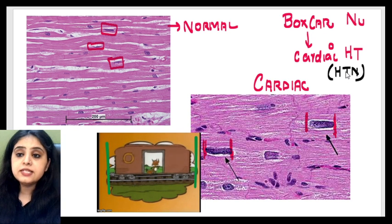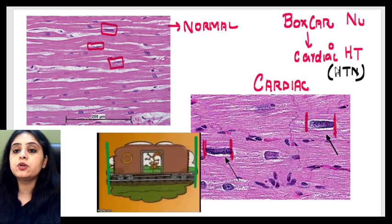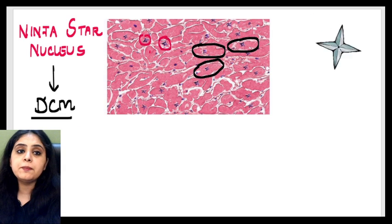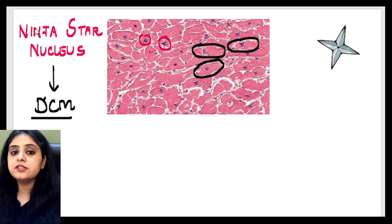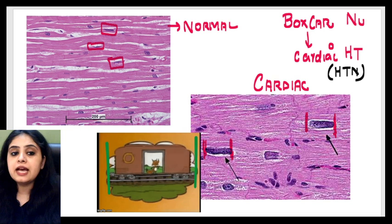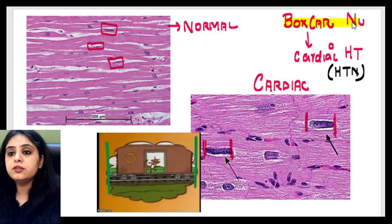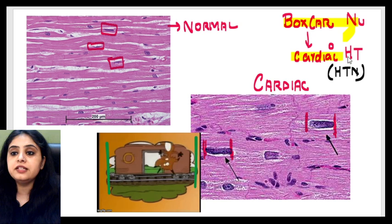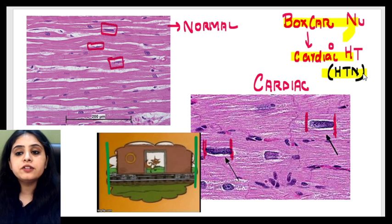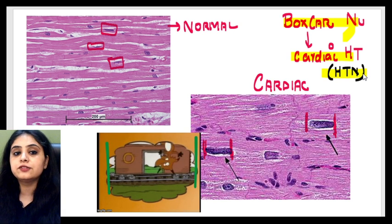This was also the AIIMS 2019 November question. Quick recap: the ninja star nucleus is seen in dilated cardiomyopathy, and the box car nuclei are seen in cardiac hypertrophy — for example, in a case of hypertension.